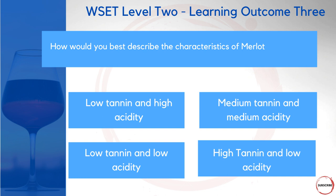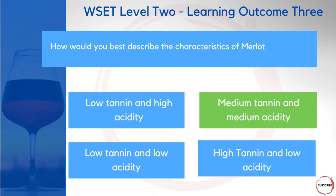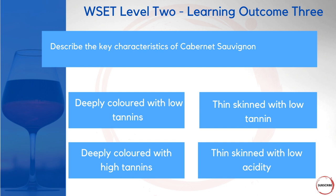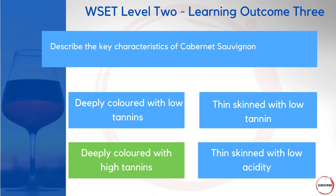Next, how would you best describe the characteristics of Merlot? Low tannin and high acidity, medium tannin and medium acidity, low tannin and low acidity, or high tannin and low acidity? The WSET syllabus covers this early in the Merlot section — it's medium tannin and medium acidity. Finally, describe the key characteristics of Cabernet Sauvignon: deeply colored with low tannin, thin skinned with low tannin, deeply colored with high tannin, or thin skinned with low acidity? Cabernet Sauvignon is deeply colored with high tannins.